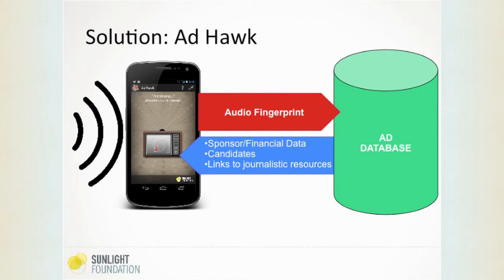The point of a system like Ad Hoc is to catch someone at just that moment where they're most hungry for this information and to serve it up in a frictionless way. What Ad Hoc does is it sits as an application on your mobile device. It listens to a political advertisement and generates an audio fingerprint. It sends that fingerprint as a query to a central ad database which returns information about the sponsor, financial data associated, the candidates involved, and links to journalistic resources found elsewhere at the Sunlight Foundation's family of sites.